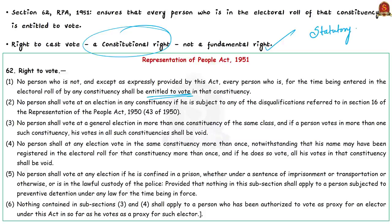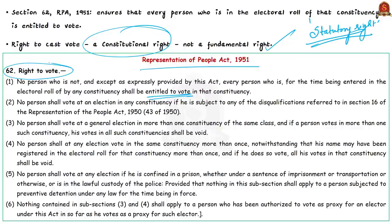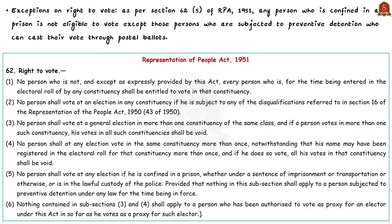A statutory right is a right given to the entire population or a particular section of population by enacting a law. In this case, the right to vote is given by the Representation of People's Act under Section 62. Clause 1 of Section 62 states that every person entered in the electoral roll of any constituency shall be entitled to vote in that constituency, except as provided in this Act. The electoral roll is the list of persons who are eligible to vote, and there are certain exceptions to this right.